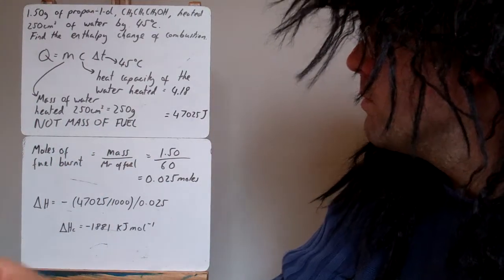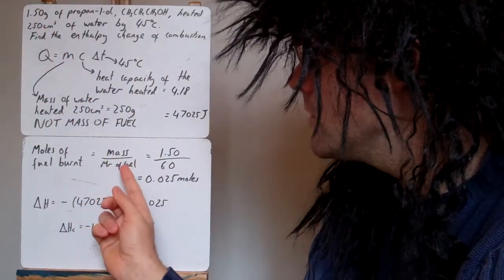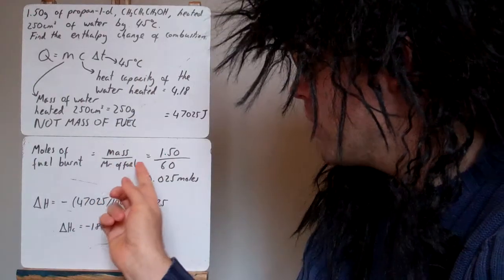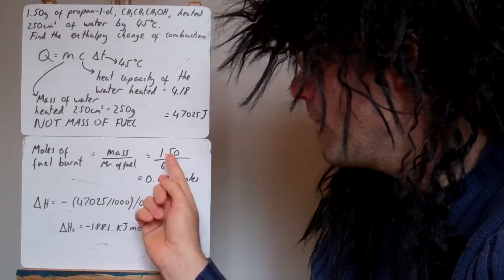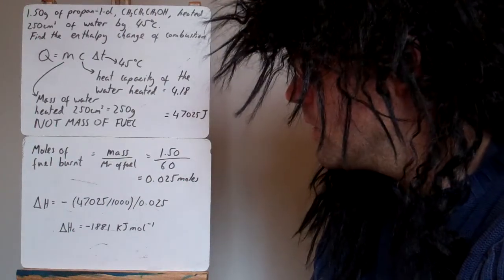How much fuel was burnt? We got the mass of fuel which was 1.5 grams divided by the molar mass of the fuel. And in this case it's propan-1-ol. The molar mass of propan-1-ol is 60. So 1.5 divided by 60. So 0.025 moles were burnt.